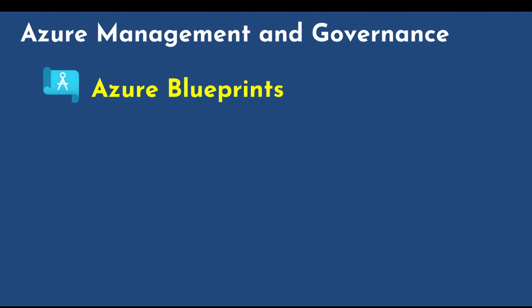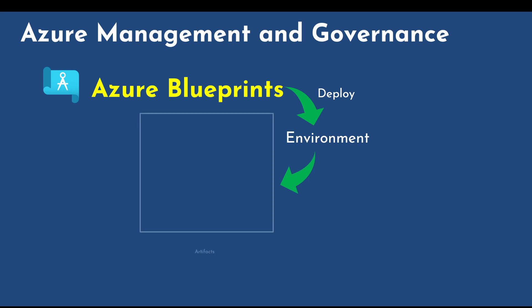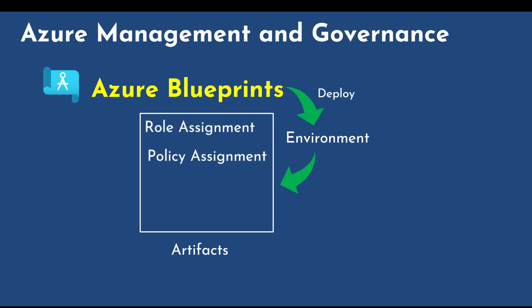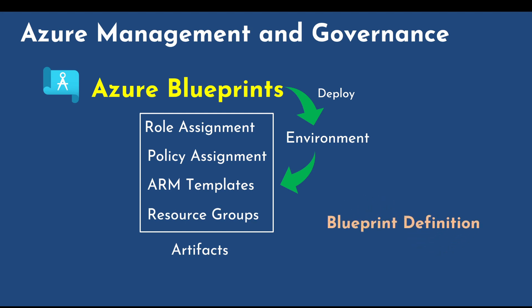The first topic is Azure Blueprints. Azure Blueprints deploy a new environment based on all of the requirement settings and configuration of the associated artifacts. These artifacts can include things such as role assignments, policy assignments, Azure Resource Management templates, and resource groups. It also preserves what should be deployed using Blueprint definition and what was deployed using Blueprint assignment. The definition is the desired deployment and assignment is what is actually being deployed.